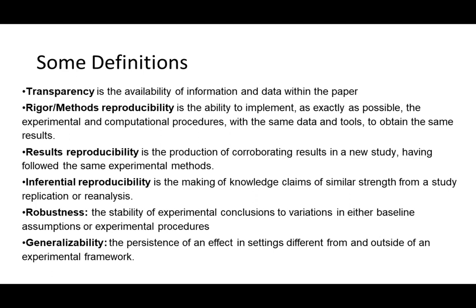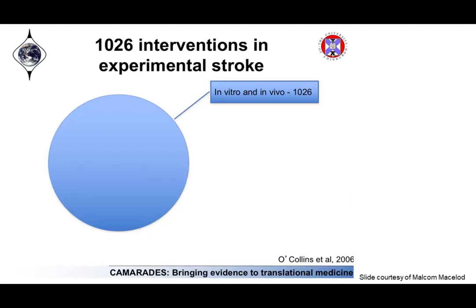So why are we talking about transparency, rigor, results reproducibility, and generalizability? Our colleagues at the Camrades Center did a study in which they looked at a thousand different in vitro and in vivo interventions for experimental stroke. There are lots of people studying stroke — over a thousand interventions over about a 10-year period published, both in vitro and in vivo, in animals and in cell lines.